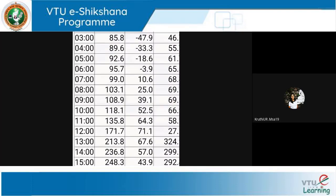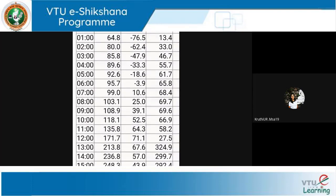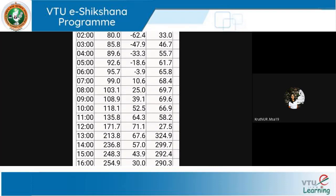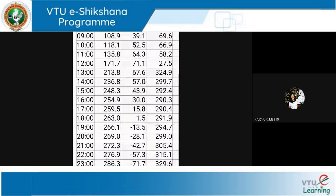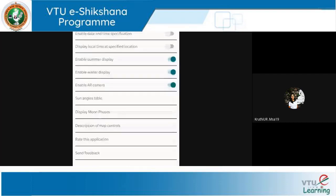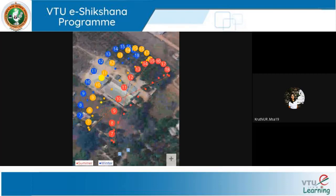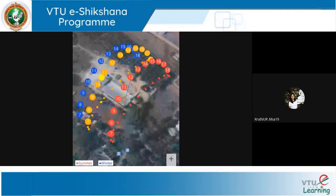Looking at the azimuth angle: at sunrise, 7 o'clock, it is 99 degrees from north. Slowly it moves towards south and at 12 o'clock it is 171 degrees — very close to 180 degrees, almost due south. After 1 o'clock it crosses south and moves towards west. West is 270 degrees, and the sun sets at about 263 degrees. Today's sun path is very close to winter solstice — we are moving away from summer and close to winter.